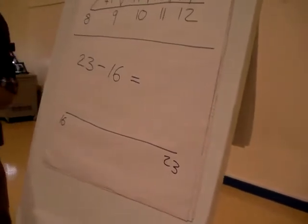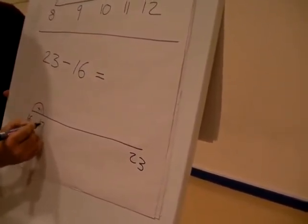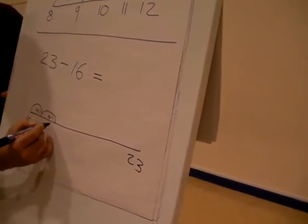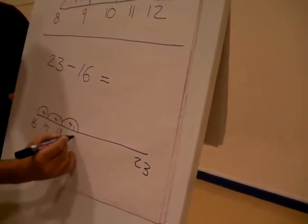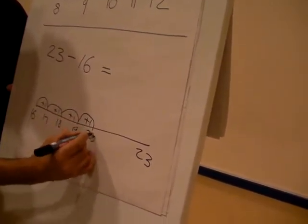I've seen some parents that have done it this way which is brilliant. They've gone add 1, 17, add 1, 18, add 1, 19 and we keep going until we get to 23.